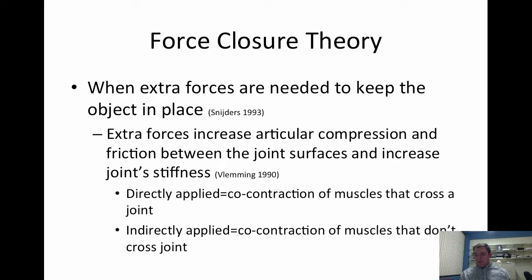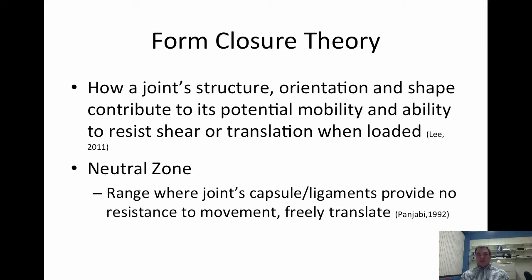Force closure theory, on the other hand, is when extra forces are needed to keep the object in place. These extra forces increase articular compression and friction between the joint surfaces and increase joint stiffness. This can be directly applied through co-contraction of muscles across the joint, or indirectly applied through co-contraction of muscles that don't cross the joint.